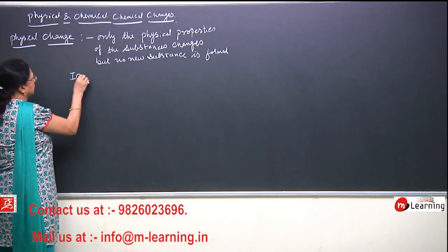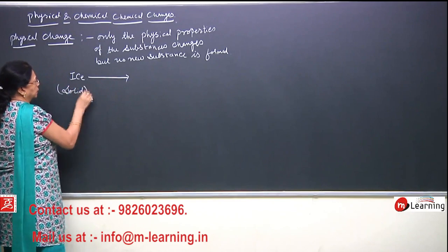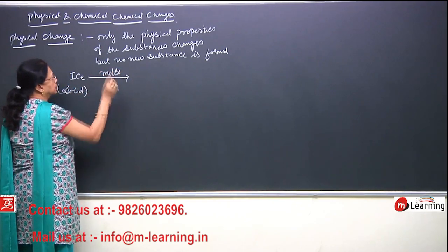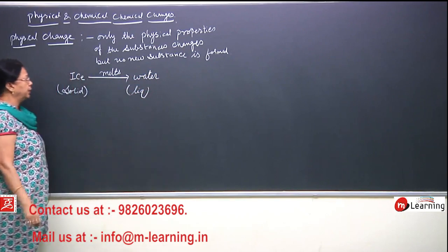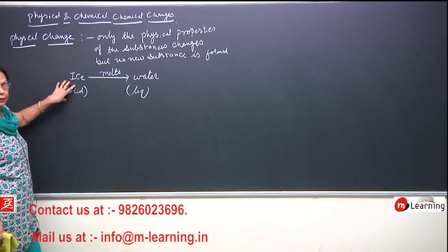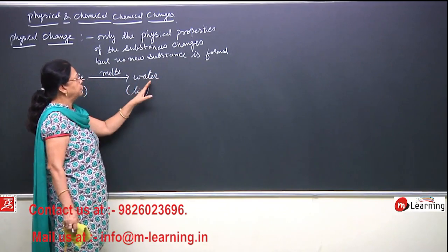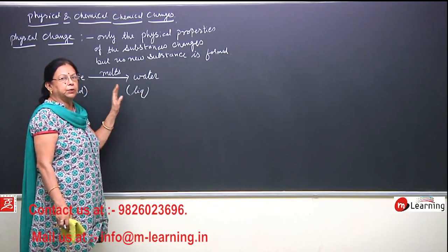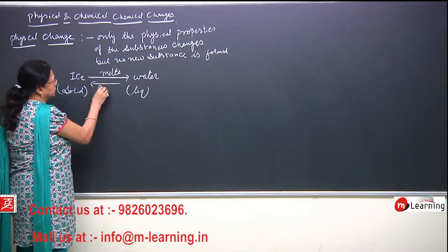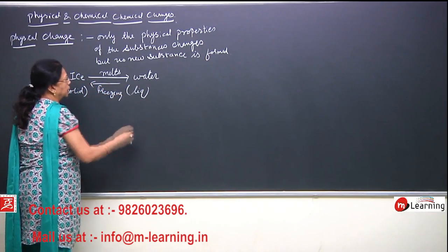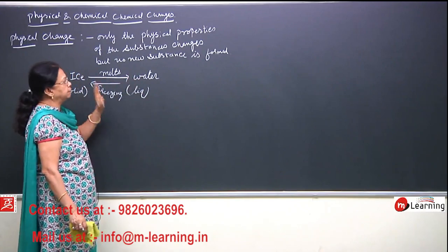Take the example of ice. Ice is solid. When it melts, it changes into water, which is a liquid. So the physical state has changed from solid to liquid without the formation of a new substance. If you want to change this water back into ice, you can easily do so by freezing it — again a physical change, from liquid to solid state, but without formation of a new substance.